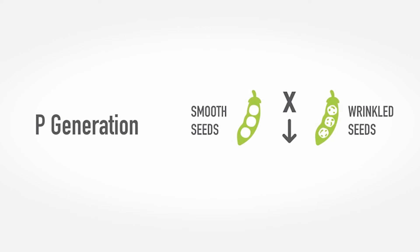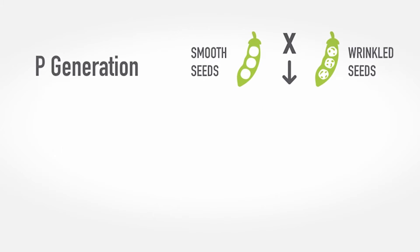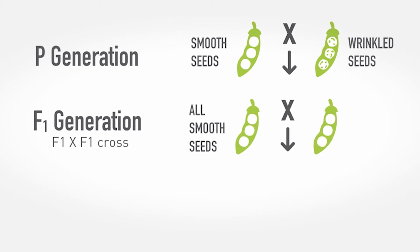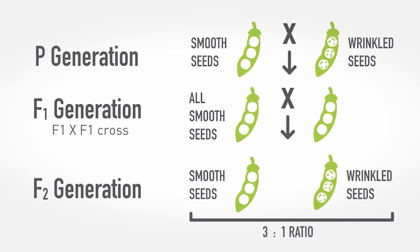When Mendel crossed two pure breeding parent peas — one of smooth seed and one of wrinkled seed — all of the resulting progeny were smooth. However, if the seed from those plants were grown up and self-pollinated, wrinkled seeds appeared again in the subsequent generation. With meticulous crosses, he laid the foundational knowledge for our understanding of dominance and recessiveness of genes and their patterns of inheritance. This set the stage for the science of plant breeding.